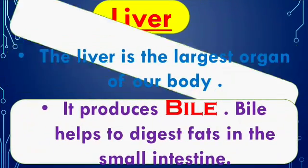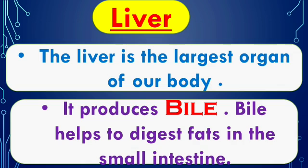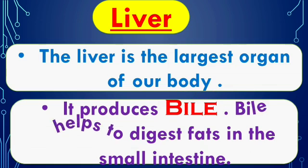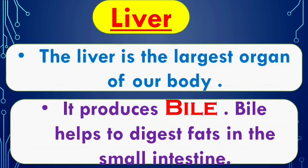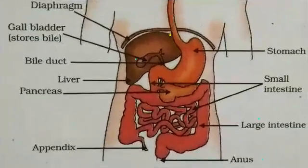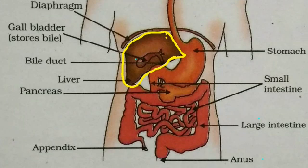The liver is the largest organ of our body. It produces bile, which helps to digest fats in the small intestine. See in the picture — the organ highlighted in yellow is the liver. In the center of the liver, there is a blue circle — that is the gall bladder, which releases bile into the small intestine.